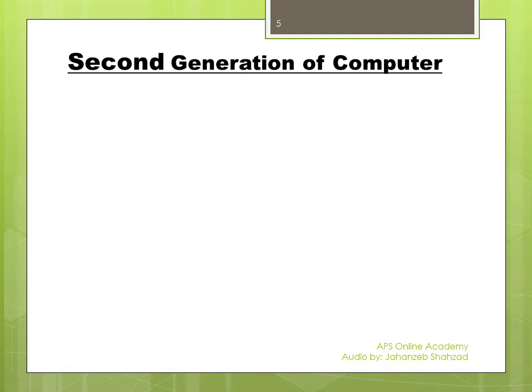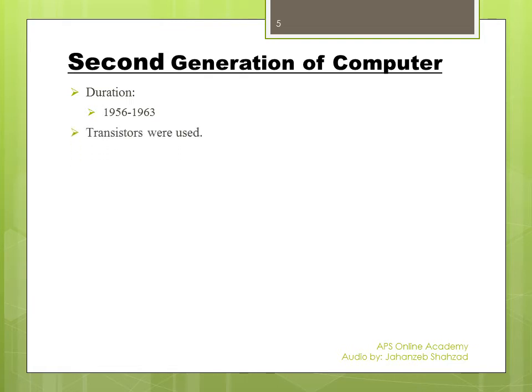Second generation of computers: the duration for second generation computers was 1956 to 1963. Vacuum tubes were replaced with transistors in the second generation. Vacuum tubes were not used because those were unreliable, so transistors were developed and used in second generation computers.